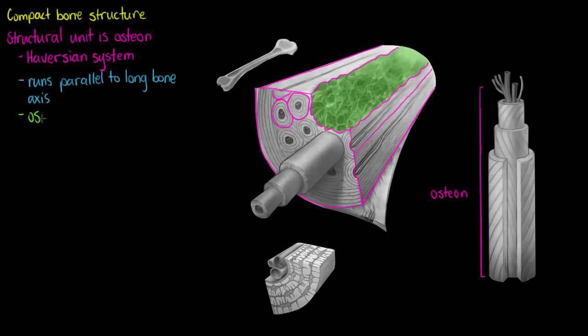But the osteon itself is also composed of several smaller features. The first of which being the lamellar plates, or lamellar rings or tubes. And I'm just going to show them here.